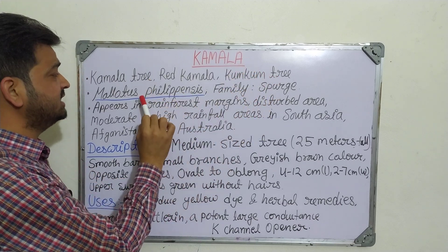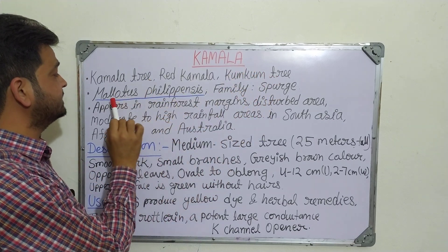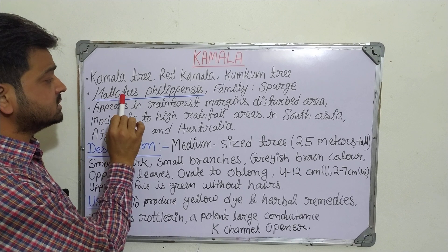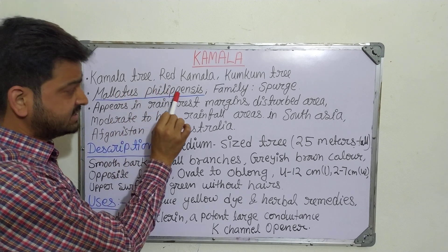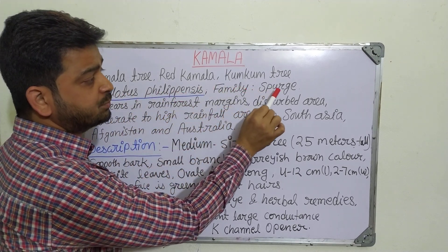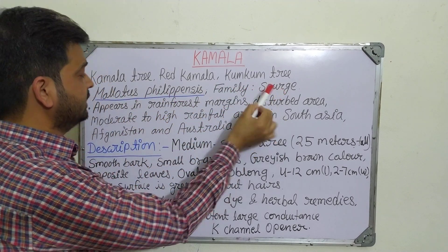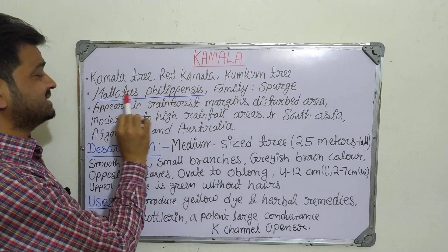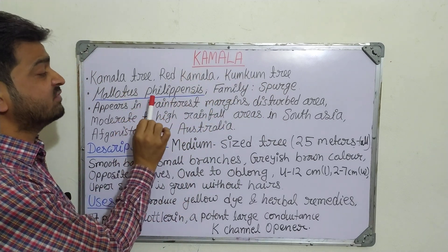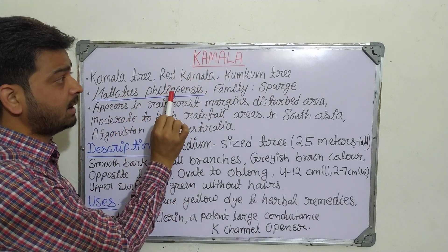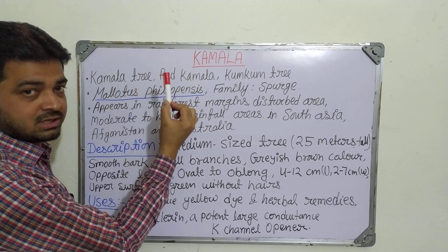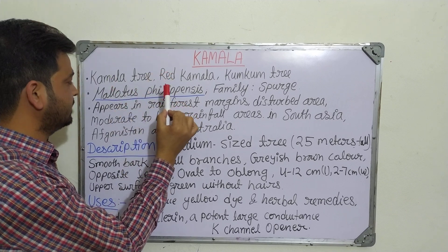The botanical name of this particular tree is Mallotus philippensis, which belongs to the family Spurge. You should remember the name Mallotus philippensis — that is the botanical name of Kamala, not Lotus Kamala, once again I'm telling.